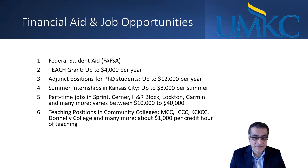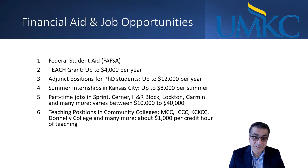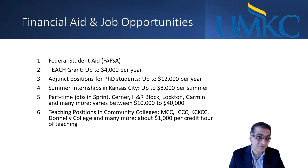Financial aid and job opportunities. FAFSA is available to all students. There is also a TEACH Grant which covers up to $4,000 per year. There are adjunct positions for PhD students in our department where they can earn up to $12,000 per year. There are summer internships in Kansas City up to $8,000 per summer. Many of our students have part-time jobs in big corporations such as Sprint, Cerner.